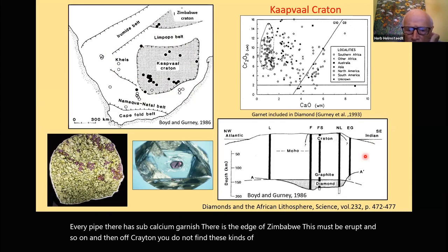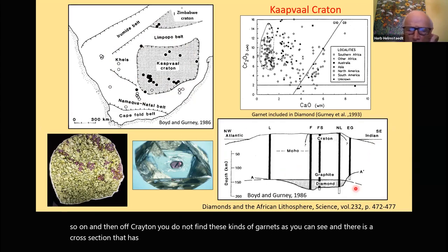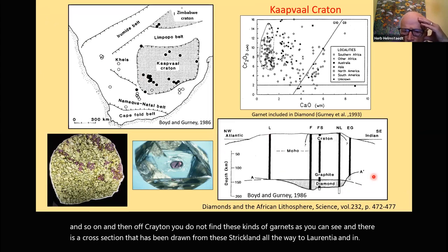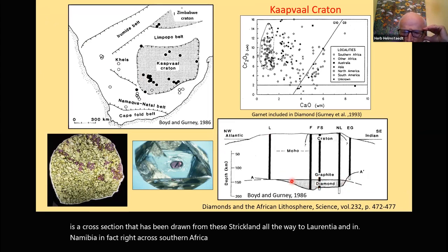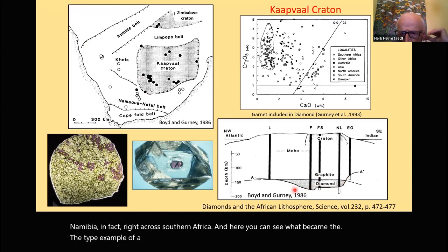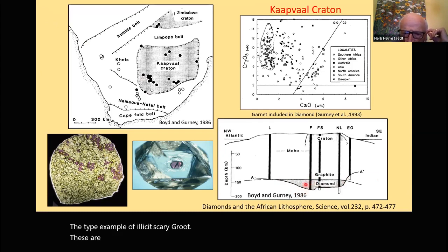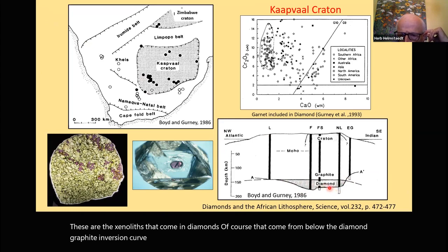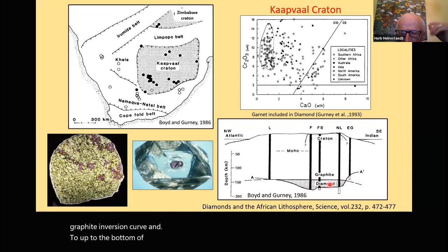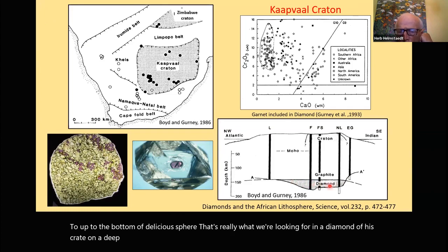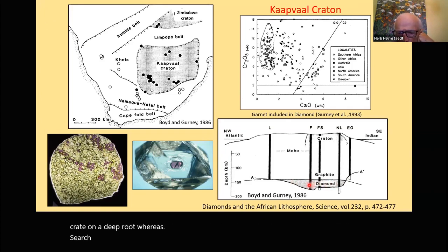The xenoliths in diamonds come from below the diamond-graphite inversion curve up to the bottom of the lithosphere. That's really what we're looking for in diamond-bearing cratons: a deep root with harzburgitic and depleted rocks. A 1993 diagram shows that garnets included in diamonds are very subcalcic — here is the famous 85% line of John Gurney, essentially separating Lherzolite and Harzburgite.